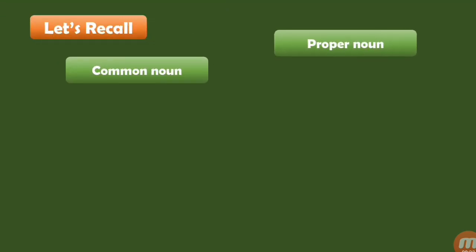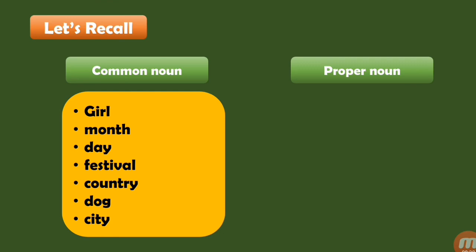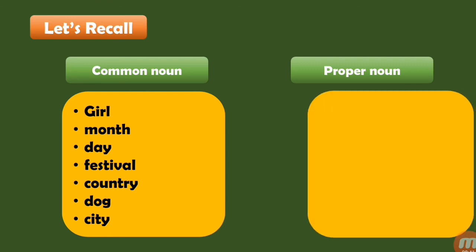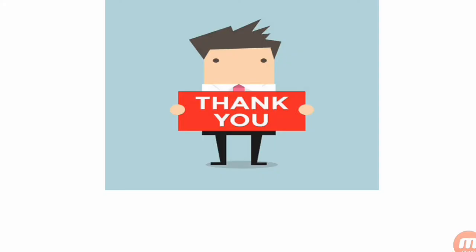Let's recall. Common noun versus proper noun: Girl — Ashwini; Month — June; Day — Tuesday; Festival — Diwali; Country — India; Dog — Moti; City — Ambanath. So we can easily identify common and proper nouns by comparing them. If you understand, please subscribe to my channel and don't forget to like and share this video.